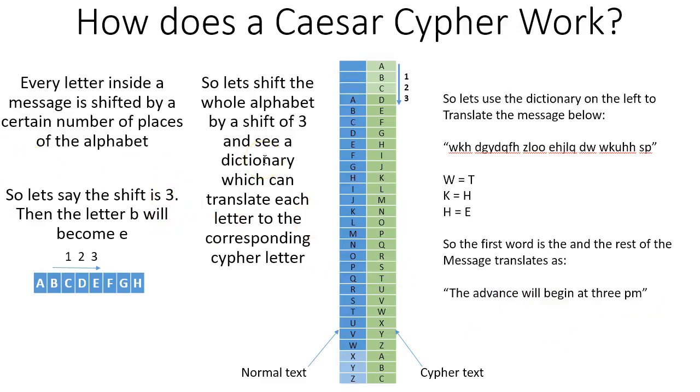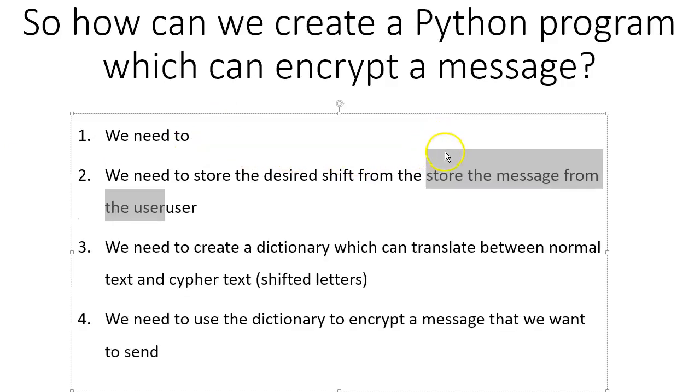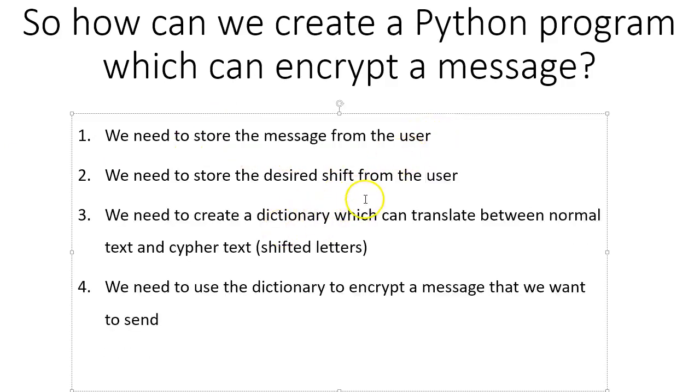So how do we look at creating an algorithm which can do this for us? First of all, we're going to need to take in and store a message from the user. Then we're going to need to take a desired shift because you don't want to use the same shift. People may figure out that there is a pattern, so you want to change the shift with the message. Then you're going to need to create, and this is the key bit, a dictionary which can translate between normal text and ciphertext.